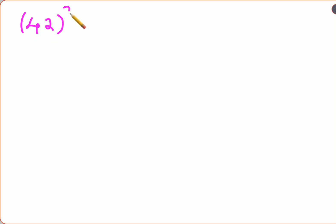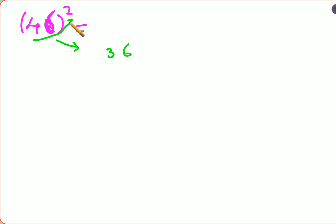Now for the universal method applicable to any two-digit number. Let's try 46 squared. First, write 6 squared which is 36. Then multiply all three: 4 times 6 times 2 equals 48. Then write 4 squared which is 16.